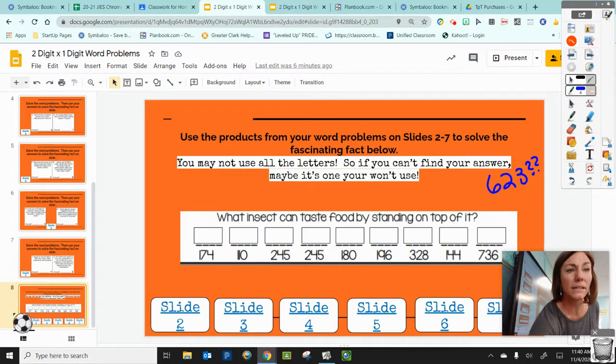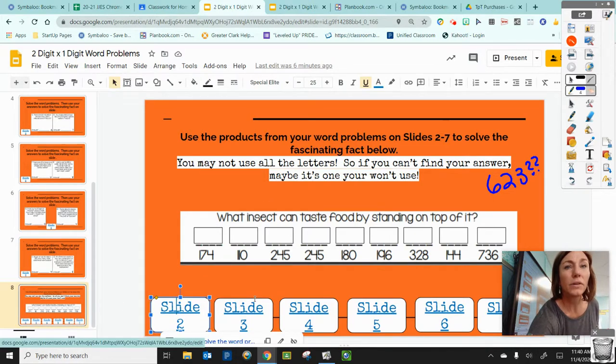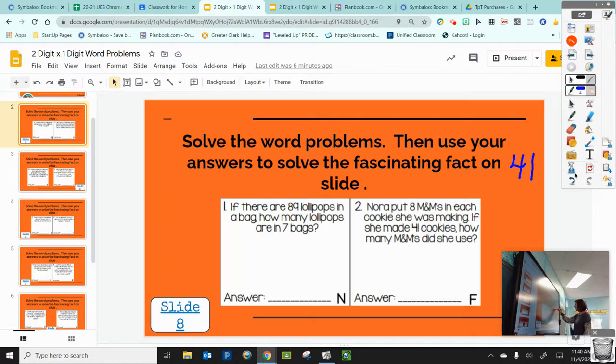So now I'm going to go back to slide 2. And I am going to solve the other problem. Now, Nora put 8 M&Ms in each cookie she was making. If she made 41 cookies, how many M&Ms did she use? Well, I know that I'm going to put that larger number on top. 41 cookies, that's a lot of cookies. And on each of those cookies there were 8 chocolate chips. So that was 8 forty-one times. So I'm going to go 41 times 8. Now, if you're still struggling to do the algorithm, then you can draw your area models. That would be totally fine. So 8 times 1 is 8. 8 times 4 is 32. So I know that my answer is 328.